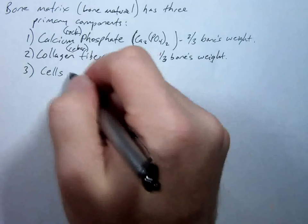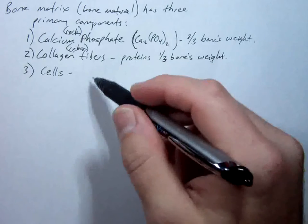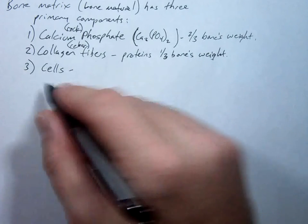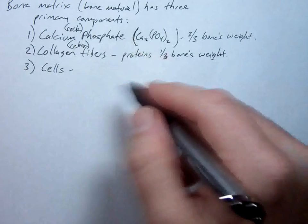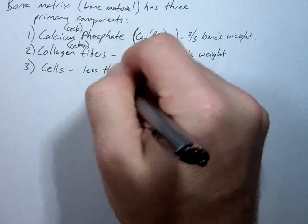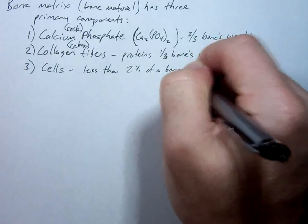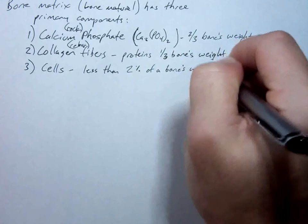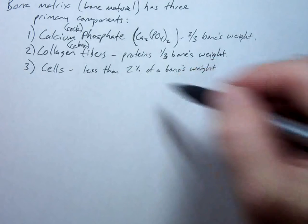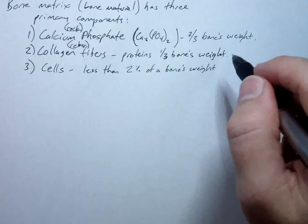Now cells — though there are a lot of cells — by weight they're not quite as much. The cells are the ones cranking out these collagen fibers and making sure calcium phosphate is in place. They're the workers, more or less stuck in this matrix helping out the process, but they only account for less than 2% of bone's weight. Calcium in milk, 2% — that's how to remember it.